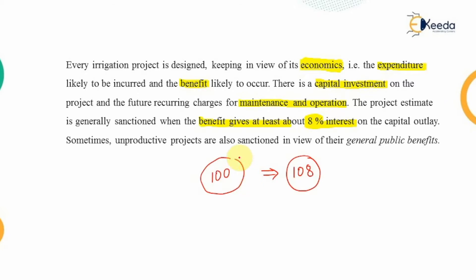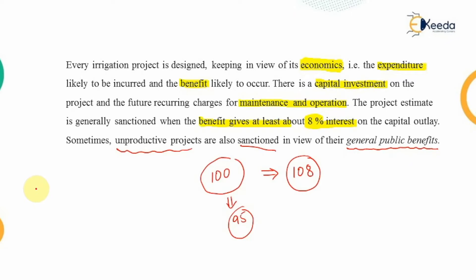However, there is a case where unproductive projects are also sanctioned — that means if you invest 100 rupees but are getting only 95 rupees in return, the project may still be sanctioned. The reason is general public benefit. If the investment on the project yields benefits to the public in general, we will go ahead with the project. So when we lay out the irrigation system, we will look at what the advantages and disadvantages are.